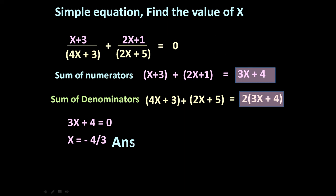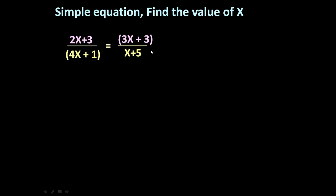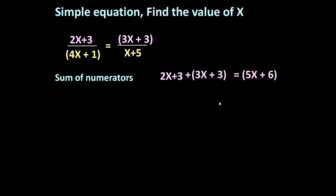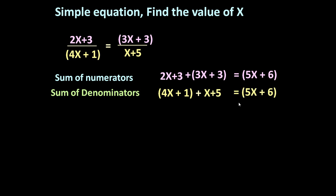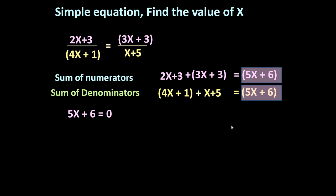Very simple method — very quickly you can get the answer provided this condition is satisfied. One more problem: find the value of x if (2x + 3)/(4x + 1) = (3x + 3)/(x + 5). Sum of numerators: 2x + 3 + 3x + 3 = 5x + 6. Sum of denominators: 4x + 1 + x + 5 = 5x + 6. They are the same, so 5x + 6 = 0, giving x = -6/5. This is the answer.